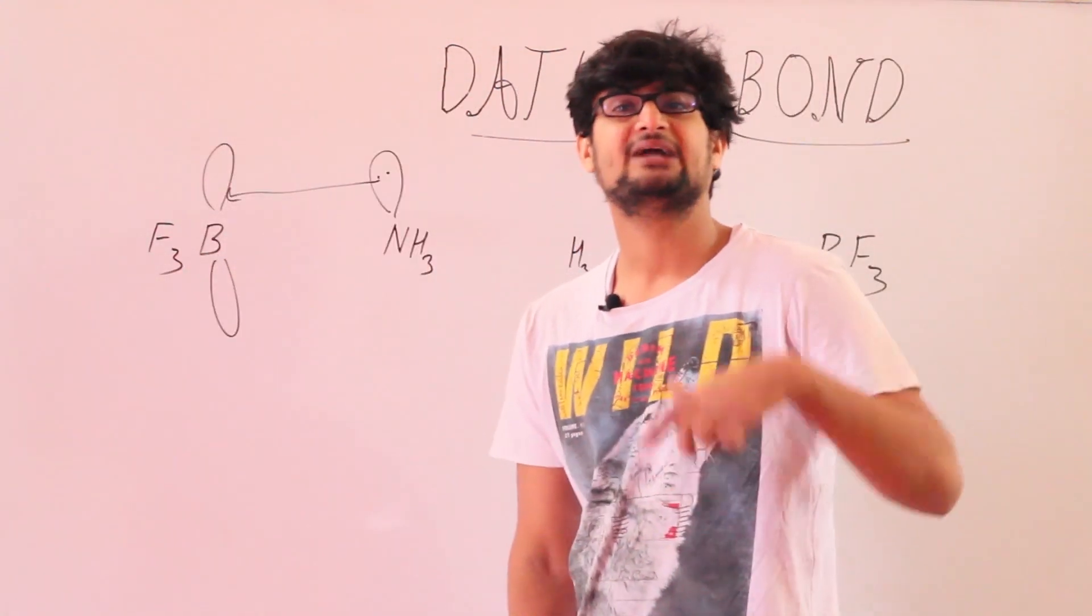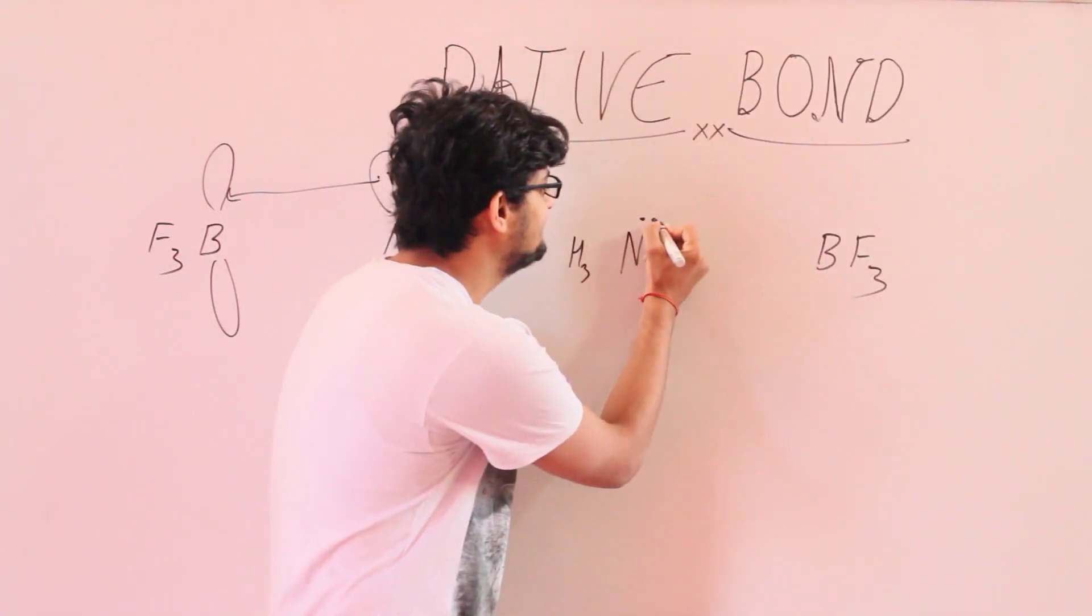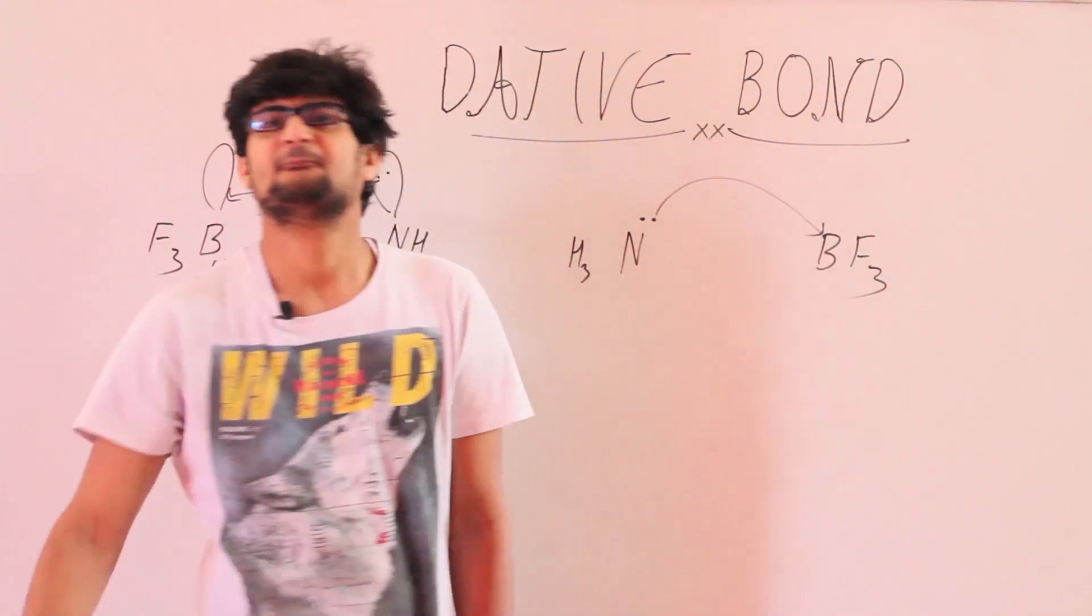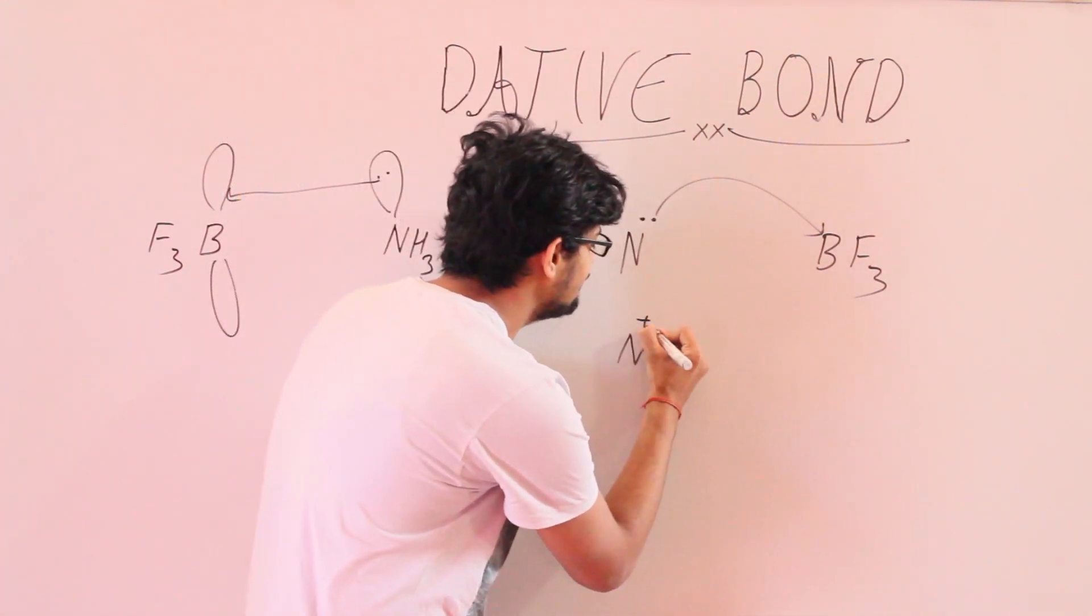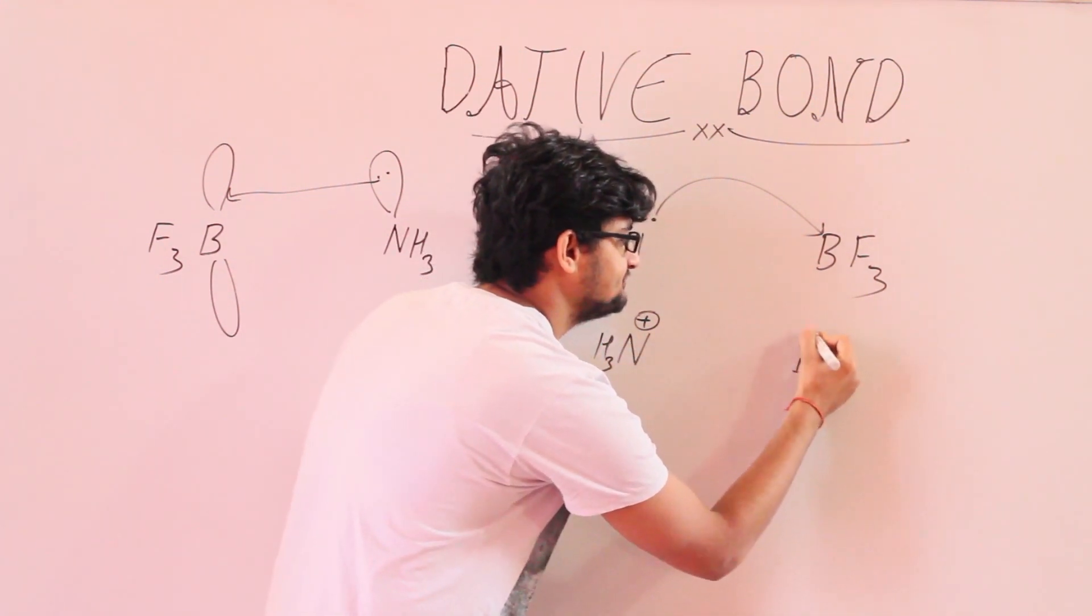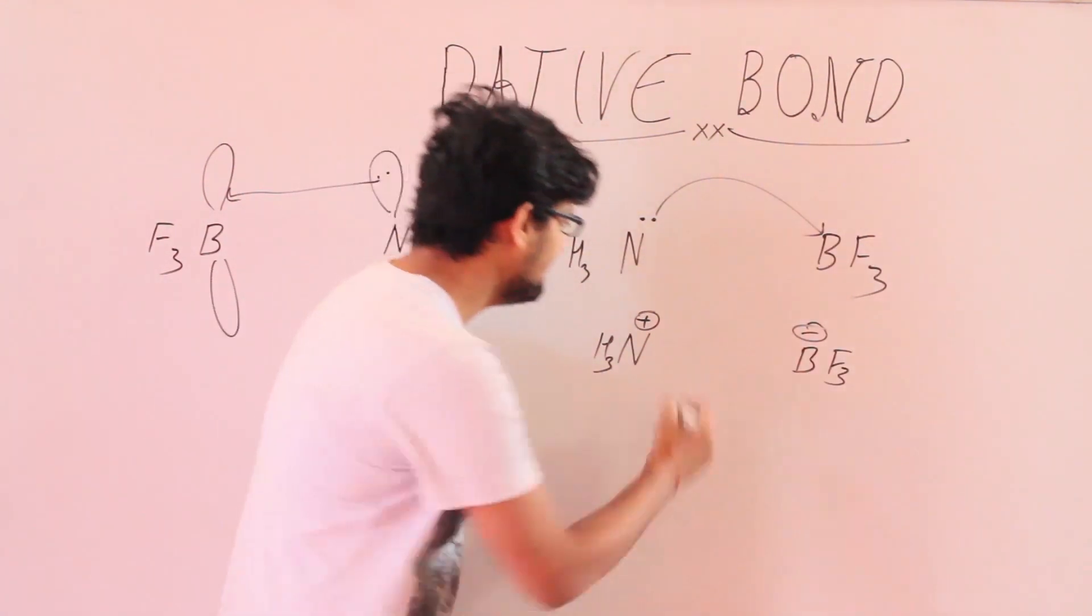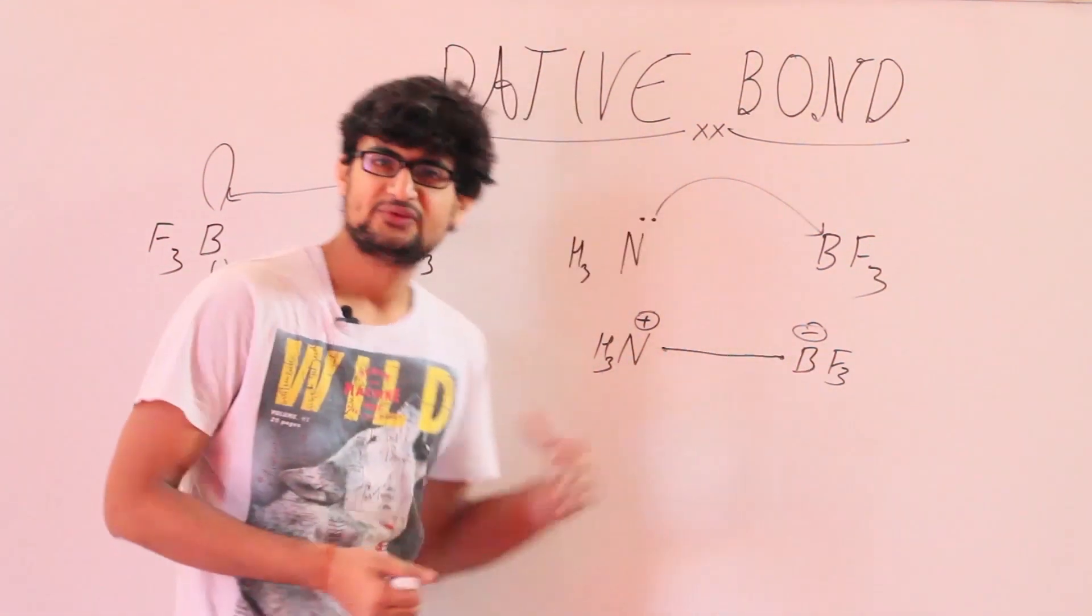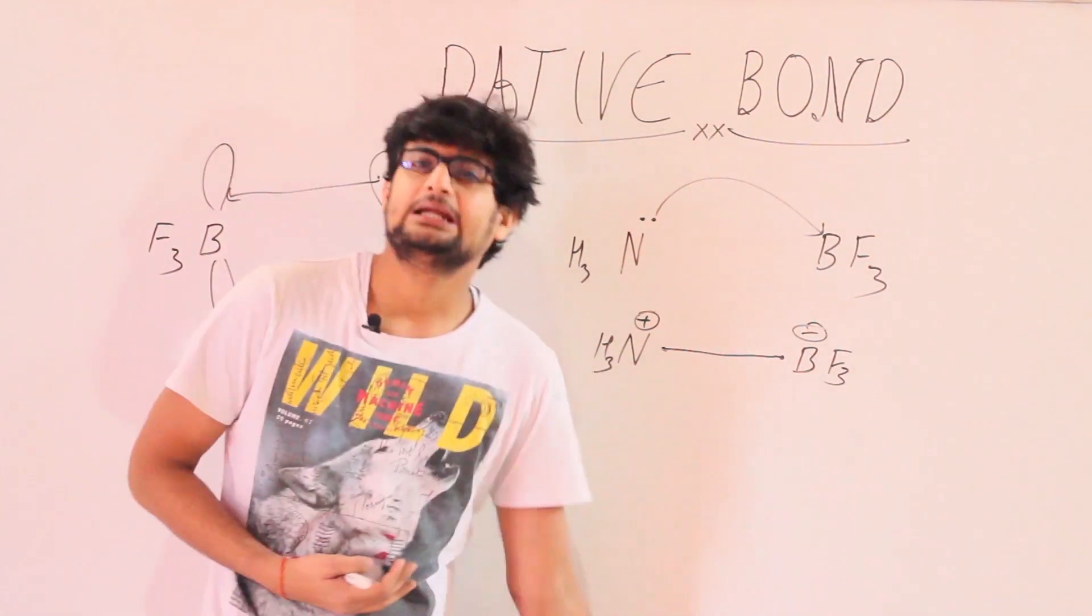Coordinate Covalent bond or the dative bond can be represented in one more way. We first assume that out of these two electrons of nitrogen, one electron is donated or transferred to the boron atom such that nitrogen will attain a positive charge while boron will attain a negative charge. Now both nitrogen and boron will have only one electron and these electrons will combine to form a bond. This is a rather better representation of Coordinate Covalent bonding or dative bonds.